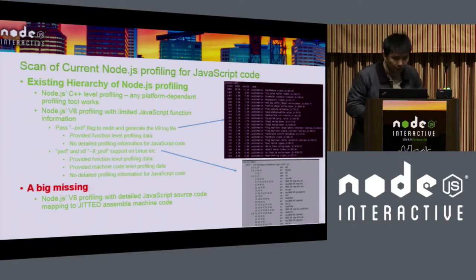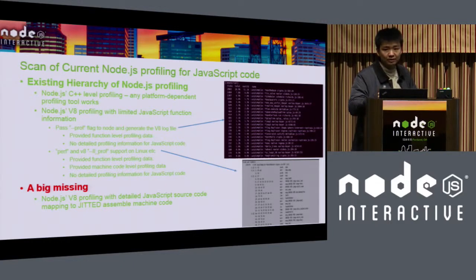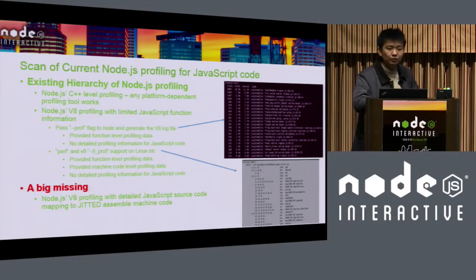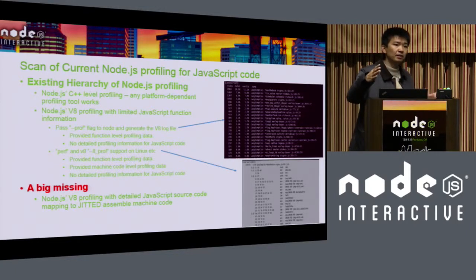The user needs to pass the prof flag to the V8 engine, and V8 will generate a log file. After some post-processing, it shows the final profiling results. You may find that it's only function-level profiling results. This is a sample-based profiling tool, so you can get the number of samples a function occupied and the percentage. You can identify the hot functions, but that's all.